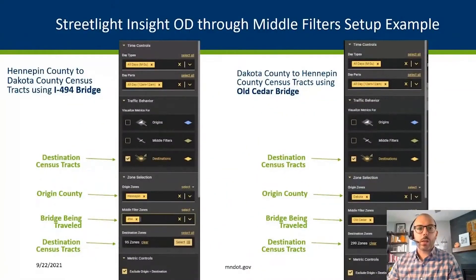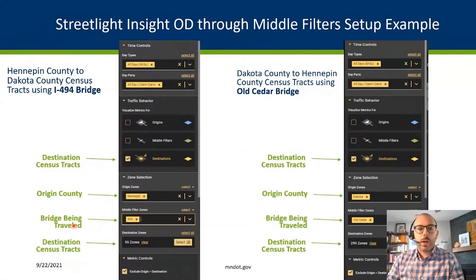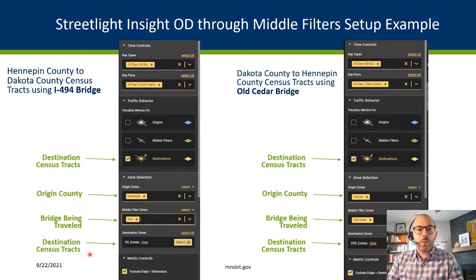This slide highlights how we developed the analysis within the Streetlight platform. We used an origin-destination through-middle-filters analysis, and for day types we selected all days. We set up the destination census tracts and selected those in the traffic behavior. We looked at what the origin county was — in this instance it was Hennepin County — used the bridge being traveled upon as the middle filter, so here is the 494 bridge, and for the destination census tracts we took the census tracts closest to the county we were coming from. We ran this from Hennepin into Dakota County and Dakota County going into Hennepin County.